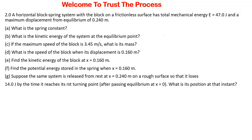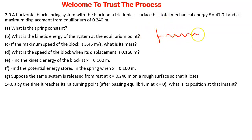Question 2 reads: a horizontal block-spring system with a block on a frictionless surface has a total mechanical energy of 47.0 joules and a maximum displacement from equilibrium of 0.240 meters. Just what the question is saying in the form of a sketch, we have the block-spring system.